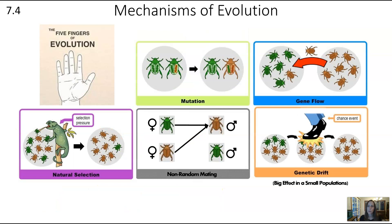To remember these five mechanisms of evolution — mutation, gene flow, natural selection, non-random mating, and genetic drift — there's a great way of remembering this from a TED-Ed video by Paul Anderson of Bozeman Science, who talks about remembering all of these mechanisms as like the five fingers of your hand. I recommend that you watch those videos.